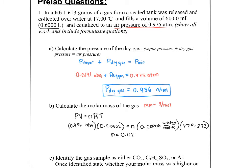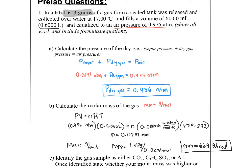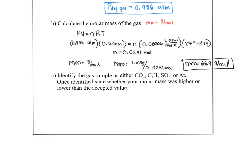With n = 0.0241 moles and the given mass of 1.613 grams, molar mass equals grams divided by moles: 1.613 ÷ 0.0241 = 66.9 g/mol for this unknown gas.